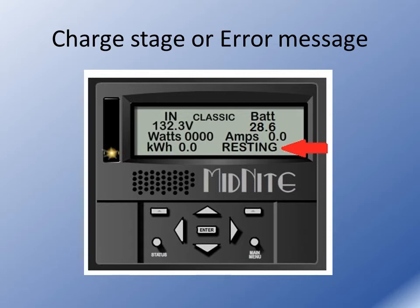You'll also notice equalizing and EQ MPPT, both meaning related things. If it says equalizing, it's actually at the set point and the timer is running. If it says EQ MPPT, we're below the equalized set point and attempting to get there by giving everything we have to the batteries. You'll also notice resting, which means there's not enough power available on the input to actually charge with — you may see voltage, but there's not any power there.